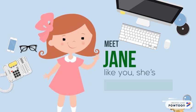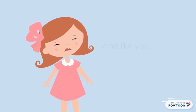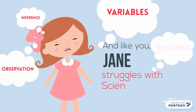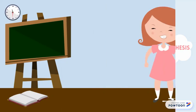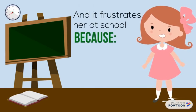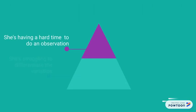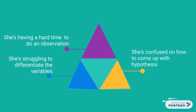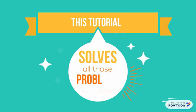Hi, it's Jane. She's a middle school student. Jane struggles with a science problem. It frustrates her because she's having a hard time doing an observation. She's struggling to differentiate the variables and she's confused on how to come up with a hypothesis. This tutorial will solve all those problems for Jane.